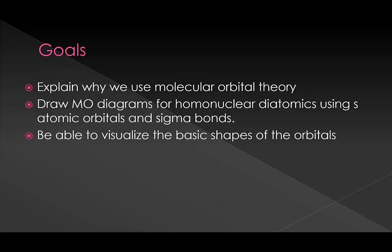We'll learn how to draw the MO diagrams for the first four homonuclear diatomics and learn to visualize the basic shapes of the s orbitals and sigma orbitals so that we can understand why some are bonding and some are antibonding.